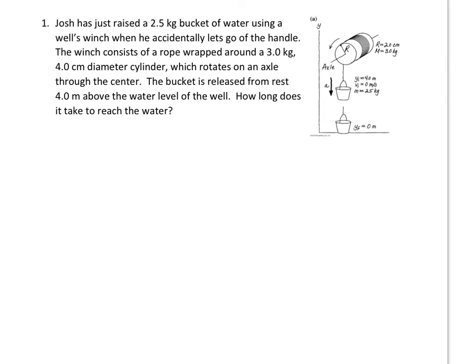Here's a diagram of what's going on. It also lists the given and find. We know that it's rotating counterclockwise. The bucket is moving down, so delta y for the bucket is negative 4 meters. It's starting from rest so the initial is zero. The mass of the bucket is 2.5 kilograms and the diameter of the winch is 4 centimeters, therefore the radius is 2 centimeters which equals 0.02 meters and the mass of the winch is 3 kilograms.